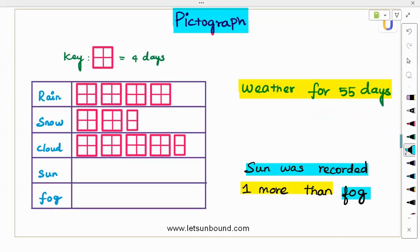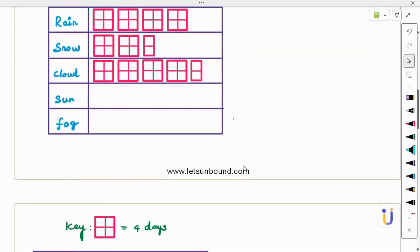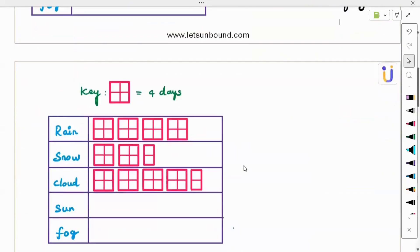We can see a square consists of four smaller squares. This represents four days, quite easy to represent. As they have said sun was recorded one more than fog, but I'm not sure with how much sun is and how much fog is. So sun is equal to one more than fog. You can take fog as x, some variable, and then sun would be x plus 1.